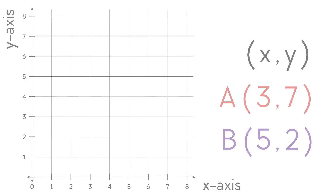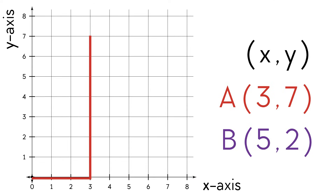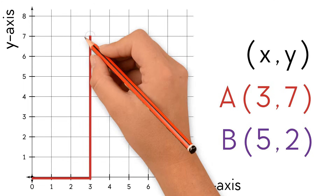Now let's try to plot ordered pairs. First let's try to plot A, (3, 7). We start at the origin and we move right 5 units. Then we move up 2 units. Now we can plot the point.